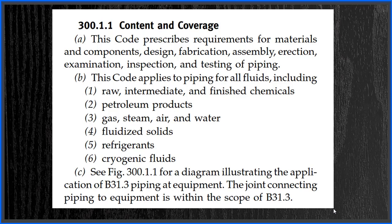Point B says this code applies to piping for all fluids, and it lists certain fluids where you can apply this code: raw, intermediate, and finished chemicals; petroleum products; gas, steam, air, and water; fluidized solids; refrigerants; and cryogenic fluids. It doesn't say any particular industry — it says the fluids are listed, and any industry where these fluids are used can use this standard to build piping.